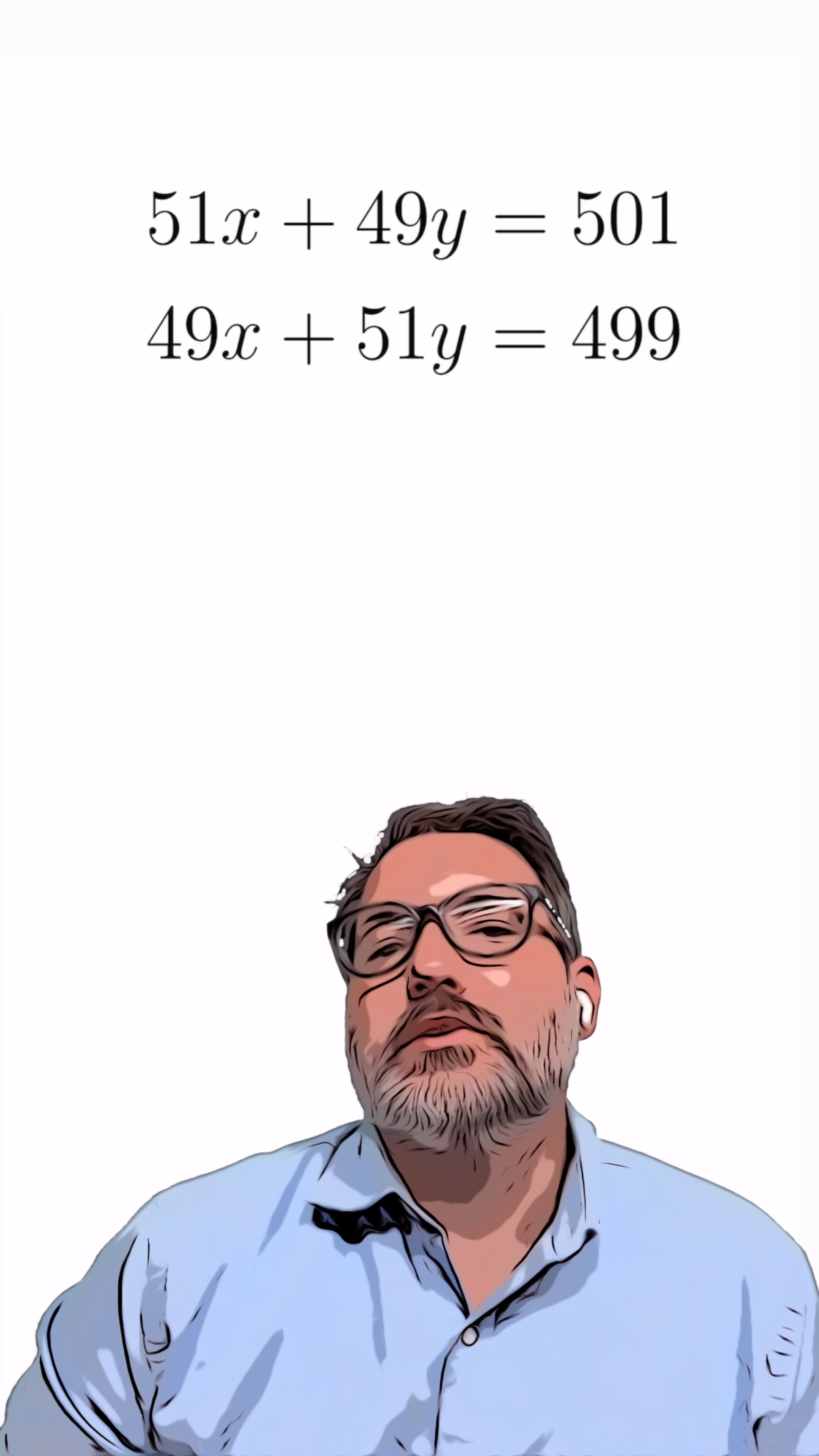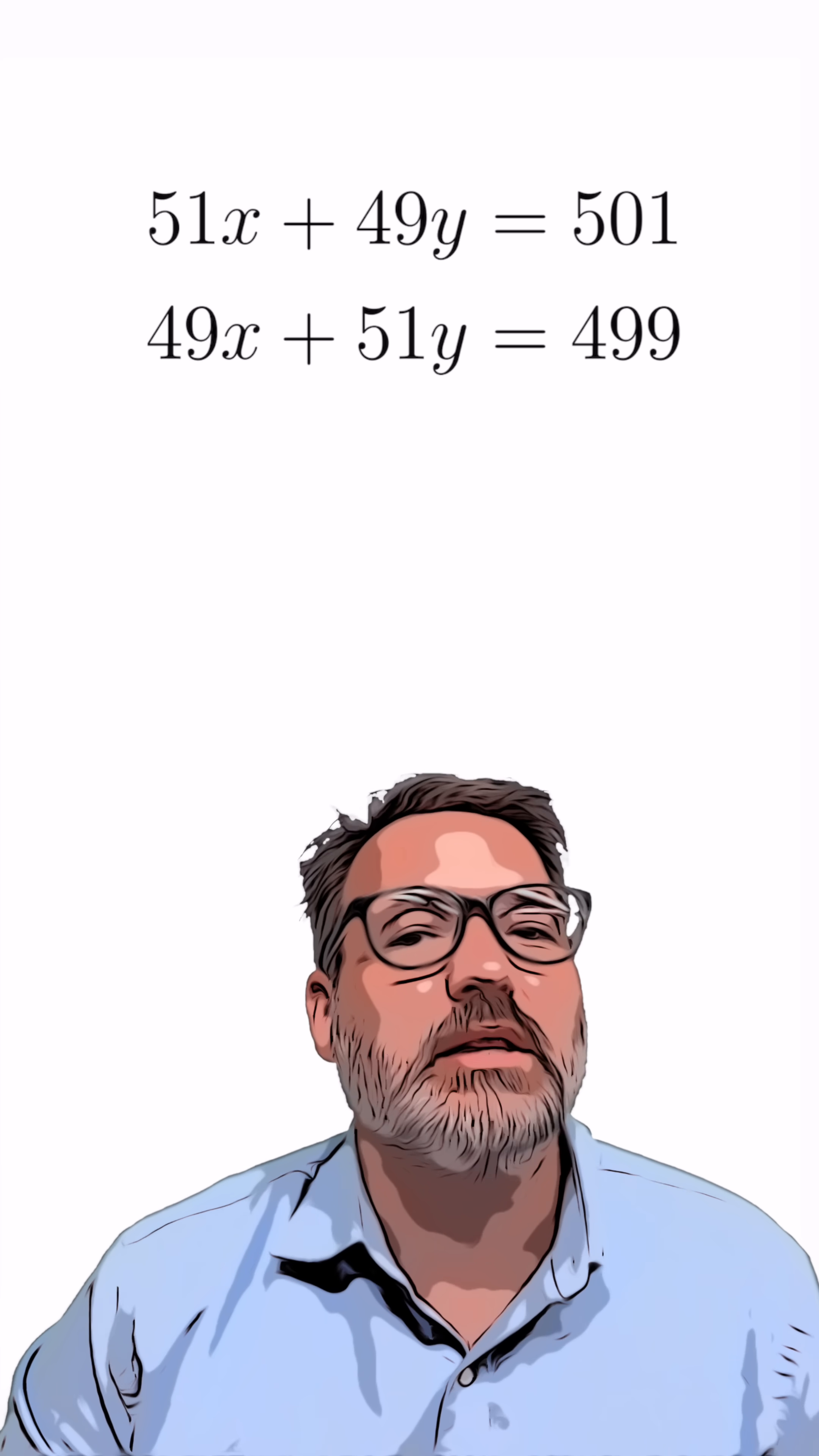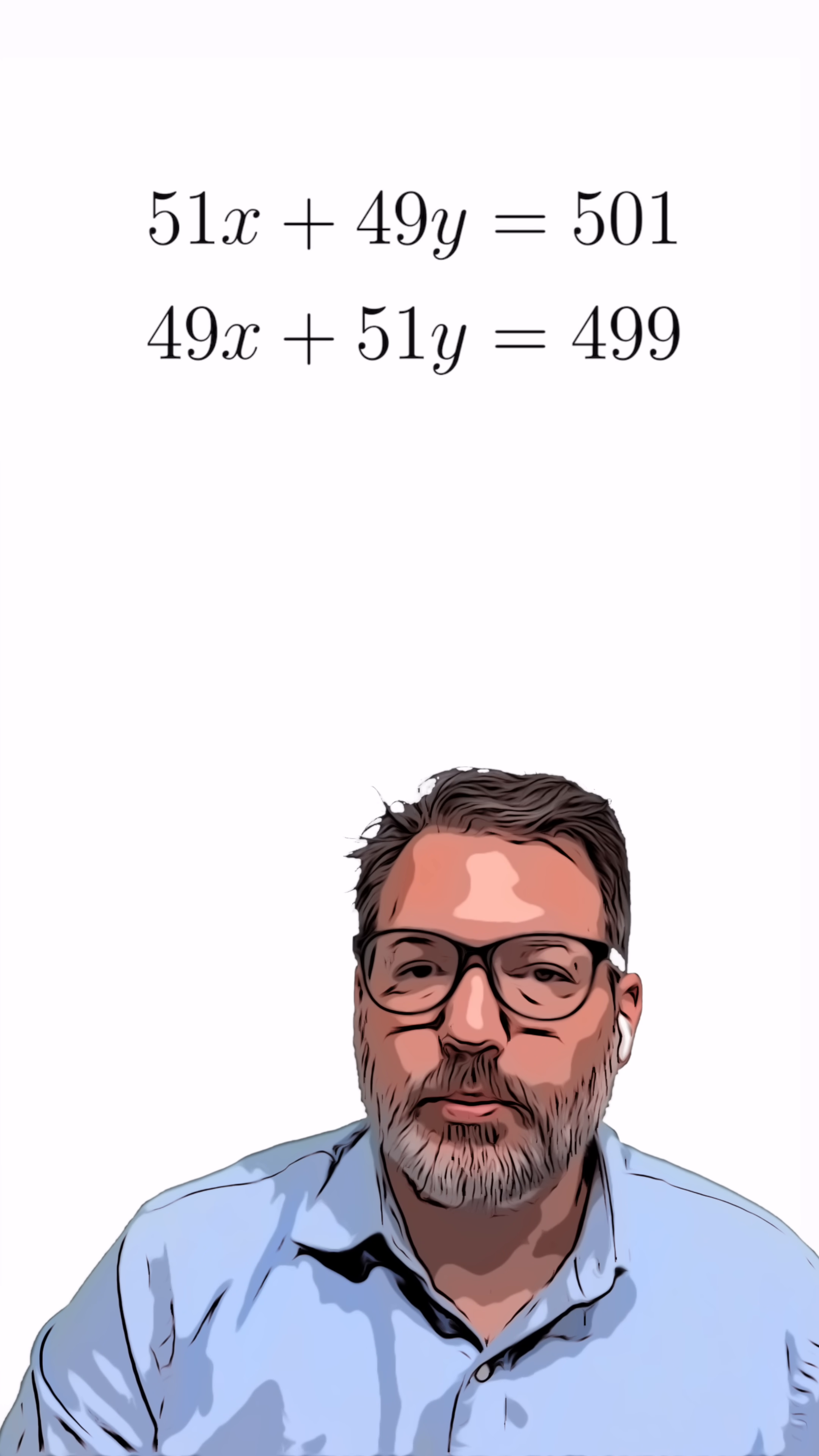Normally, what we might do here is get one of the variables by itself in terms of the other one, and then substitute that into the other equation. But with coefficients like 51 and 49, that is not going to be an easy process here.